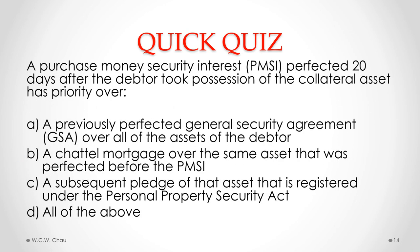Please pause this video to carefully look at this question and choose the correct answer. A purchase money security interest, or PMSI, perfected 20 days after the debtor took possession of the collateral asset has priority over — the answer is C — a subsequent pledge of that asset registered under the Personal Property Security Act. Remember, this PMSI was perfected 20 days after, which is beyond the 15-day period, so it does not have super priority; it only has priority over subsequently registered security interests.